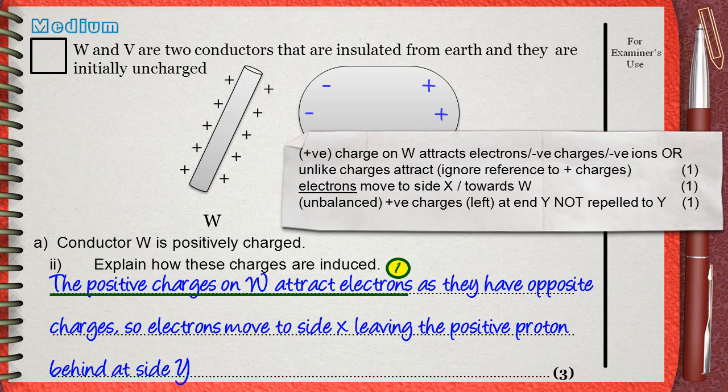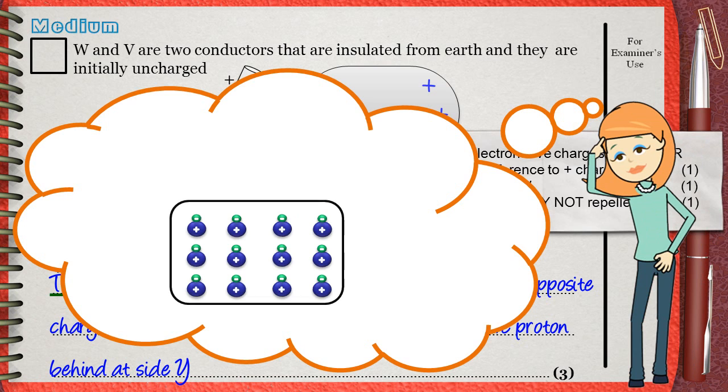Let's see again what happened. When you approach the positive rod, electrons are attracted from the far side to the closer side by electrostatic attraction forces. As you see here,